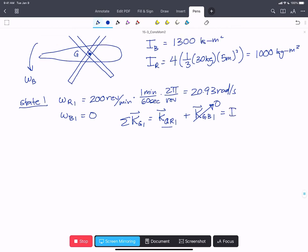That's going to be I of the rotor times omega of the rotor at state one. We'll assume these are all in the positive k-hat direction. And so we end up with 20,930 kilograms meters squared per second in the k-hat direction.